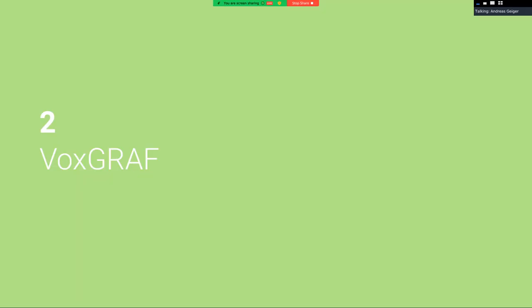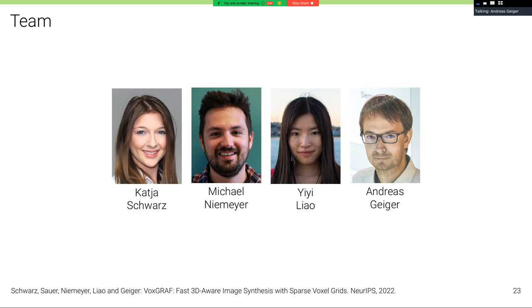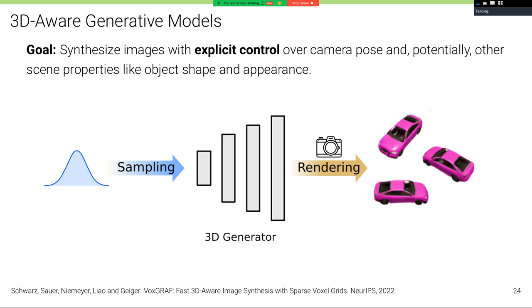So let's now move from progress in 2D generative modeling to 3D generative modeling. And I want to start with VoxGRAF. This is joint work with Katja Schwarz, Michael Niemeyer, and Yi Liao. The goal in 3D-aware generative models is to synthesize images with explicit control over camera pose and potentially over scene properties like object shape and appearance, but to train these models only from unstructured 2D image collections.